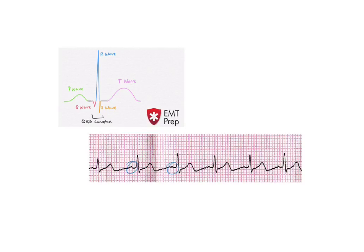First is the P wave, shown here in these blue circles. The P wave corresponds to the electrical activity when the atria contract or depolarize.